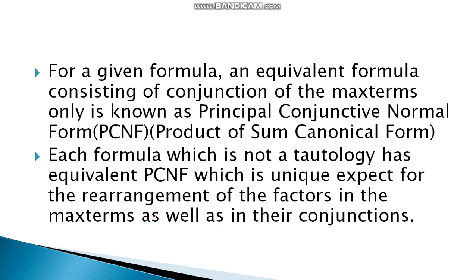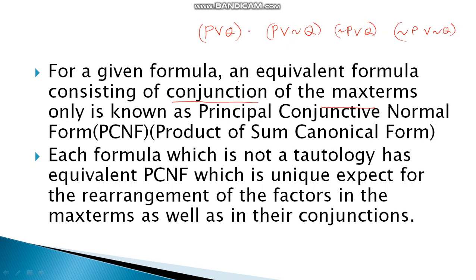For a given formula, an equivalent formula consisting of a conjunction of max terms is the Principal Conjunctive Normal Form. For a two-variable formula, one max term could be P OR Q, another P OR NOT Q, another NOT P OR Q, and NOT P OR NOT Q. The conjunction of these disjunctions is called PCNF, also known as Product of Sum canonical form.